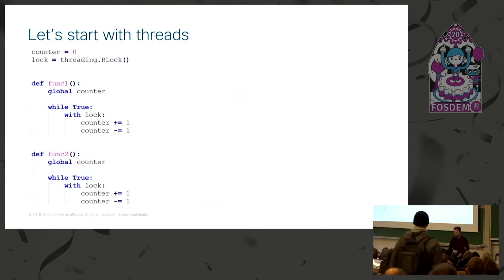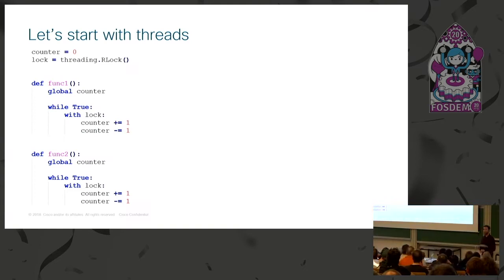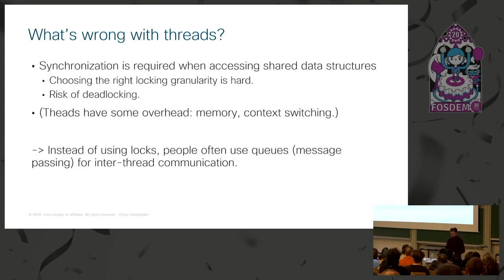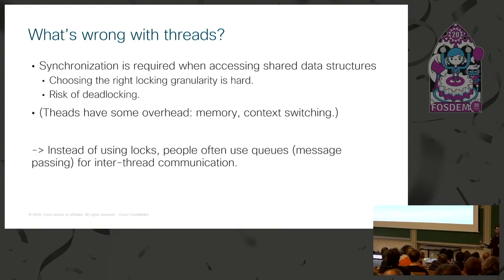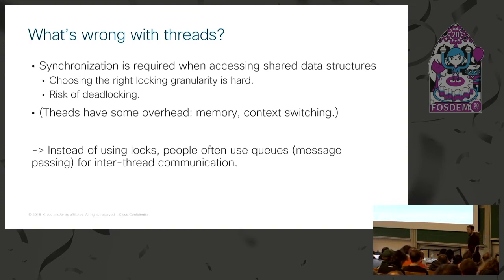The way to solve that is by using a lock. You create a lock and surround the blocks where you modify that shared variable with a with-lock context manager, preventing the two threads from manipulating the same variable at the same time. The disadvantage of using threads is that as soon as you have to manipulate shared data structures, you have to think about locking, which is very hard to get right. Either you choose one global lock — risking that things that could go in parallel become sequential — or you use many fine-grained locks, one per data structure, and then you risk deadlocking.